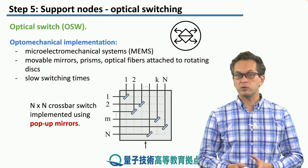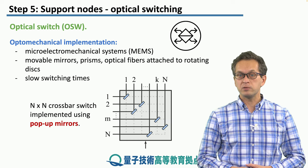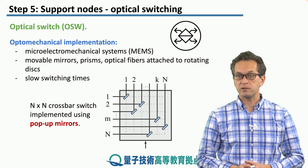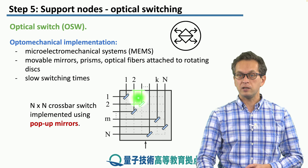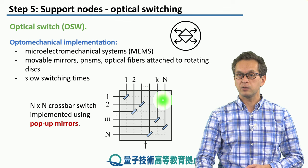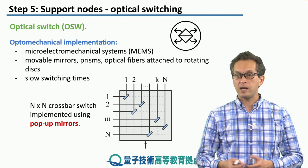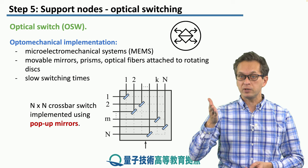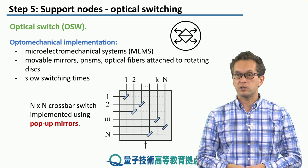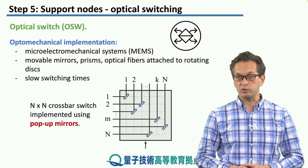An example would be an N-by-N crossbar switch that uses pop-up mirrors. Here, we place a mirror at each intersection of an output line with an input line. Based on the configuration, one of the mirrors pops up and makes sure that the beam is deflected to the desired output.